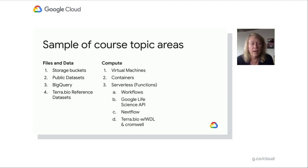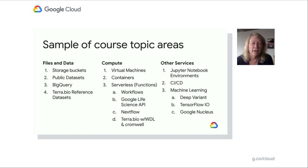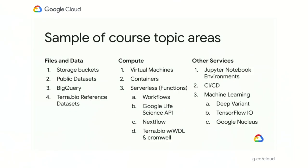In the compute area, I cover topics such as virtual machines, running containers, clusters of each of these, and also serverless or functions at the workflow level, the Google Life Sciences API (called the Pipelines API), Nextflow, and higher level services such as Terra.bio. Additionally, to cover the interactive pattern, I have information about working with and setting up Jupyter Notebook environments on the Google Cloud Platform. I also include modern DevOps practices such as CI/CD — continuous integration and continuous deployment — and information about machine learning specific to genomics, covering examples of libraries like DeepVariant, TensorFlow.io, and Google Nucleus.